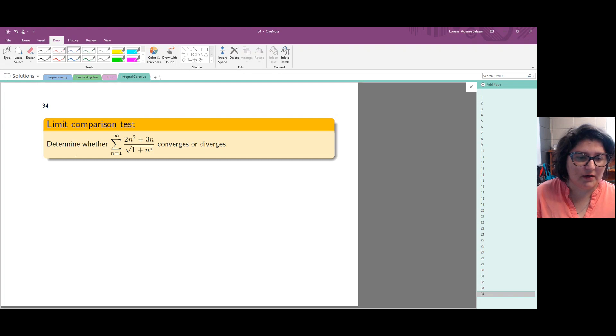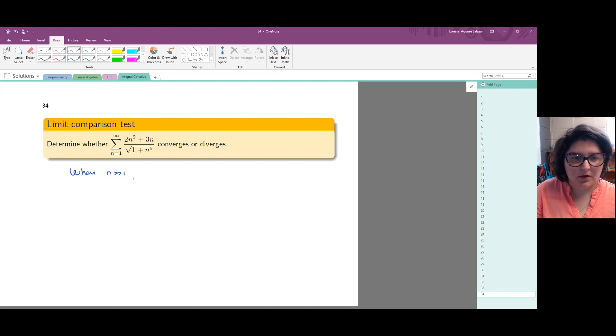Now notice that when n is large, we have that 2n squared plus 3n is essentially 2n squared, because n is a lot smaller than n squared when n is huge. And similarly 1 plus n to the 5 is essentially n to the 5.